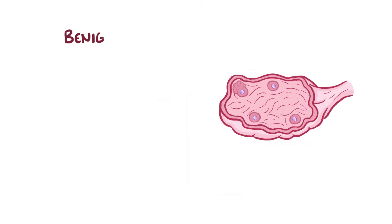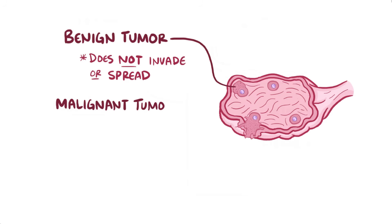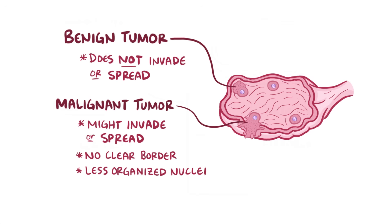If any of those cells start to divide uncontrollably, it can either form a benign tumor, which means that it doesn't invade nearby tissue or spread to other parts of the body, or it can be a malignant tumor, which means that it can invade nearby tissue and spread to other parts of the body. Compared with benign tumor cells, malignant tumor cells have key features, like not having a clearly defined border or having slightly less organized nuclei.